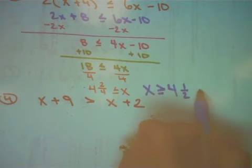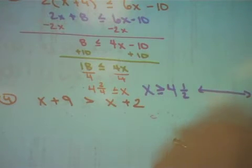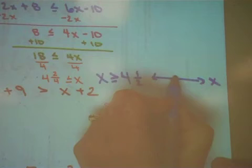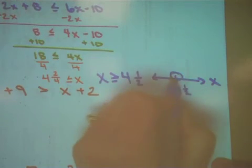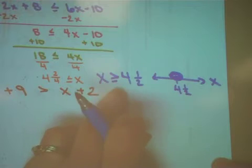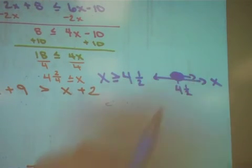So now I have my number line. My x is my variable. My solution is 4 and 1 half. This takes a filled in circle. And x's get greater than or equal to traveling to the right.